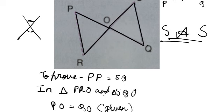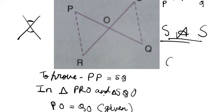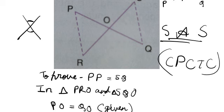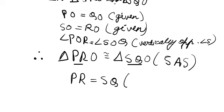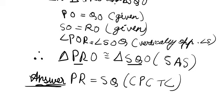We have to prove that these two sides are equal. We have studied that congruent parts of congruent triangles are congruent — CPCTC. PR is the first side of triangle PRO and SQ is the corresponding first side of triangle SQO. Therefore, PR equals SQ by CPCTC. This is our complete answer.